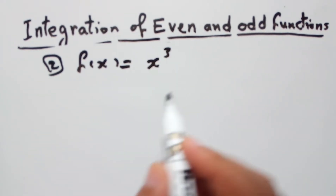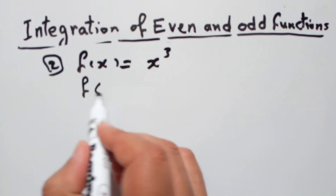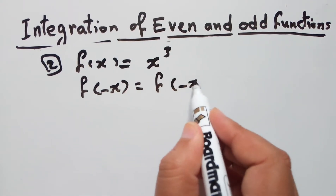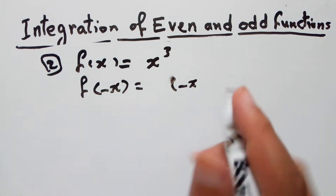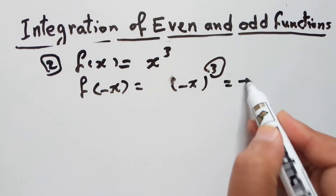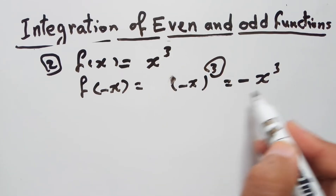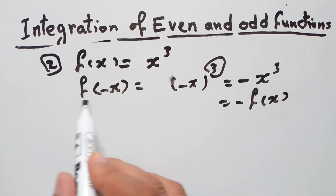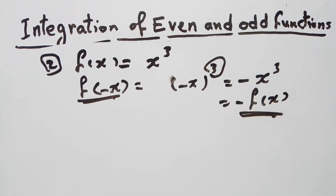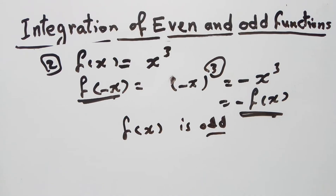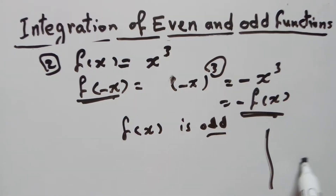Example number two: f(x) = x³. If you replace x with -x, you get (-x)³. A negative number raised to an odd power remains negative, so you get -x³, which means the result is -f(x). Therefore f(-x) = -f(x).